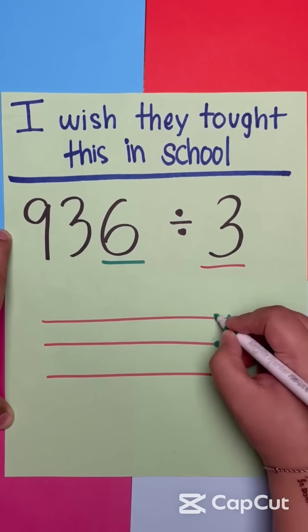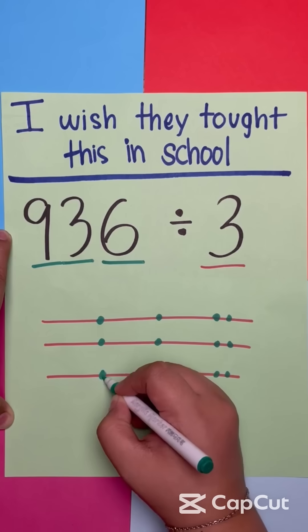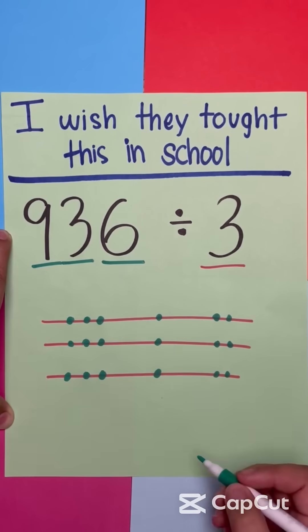Number two, why do plants hate math? Because it gives them square roots, and nobody wants to be root-bound in class.